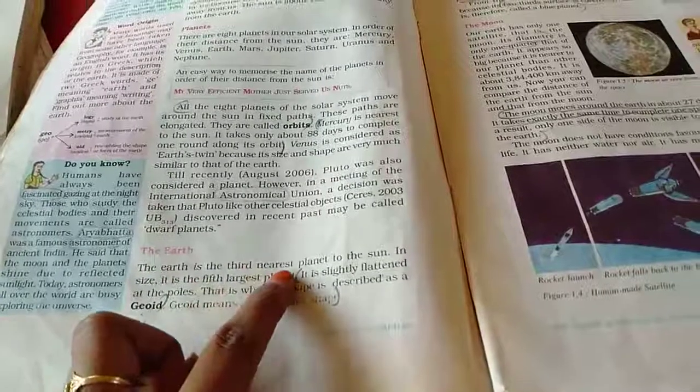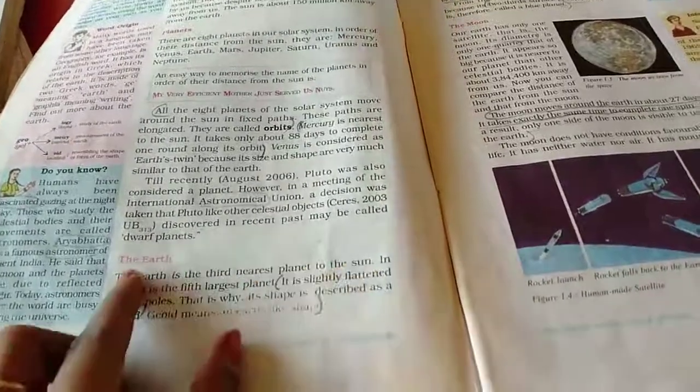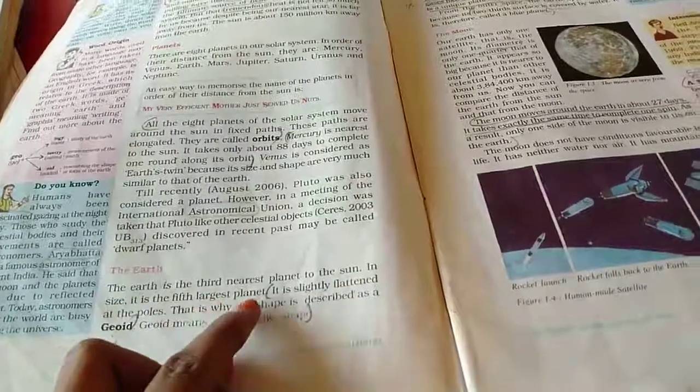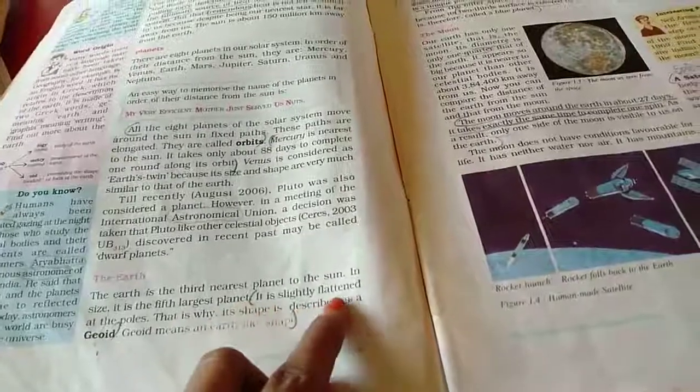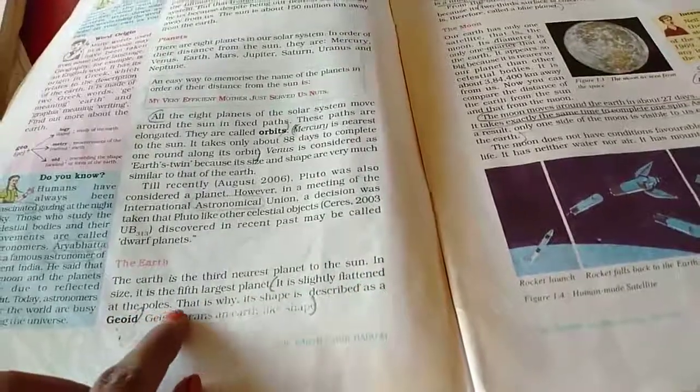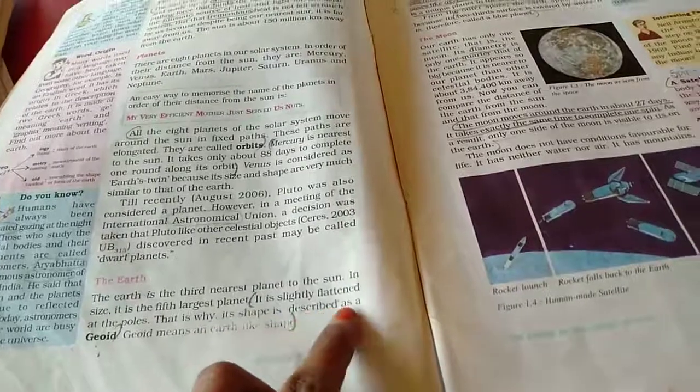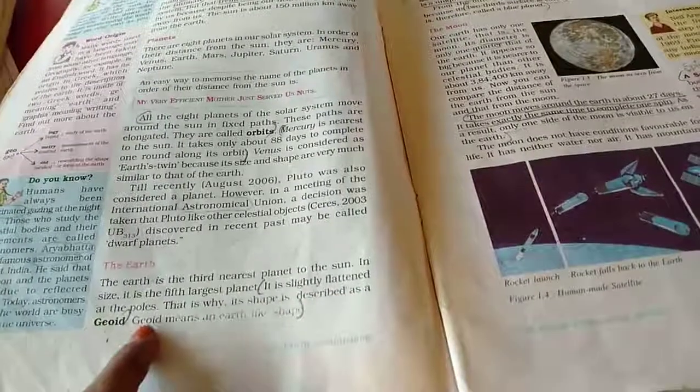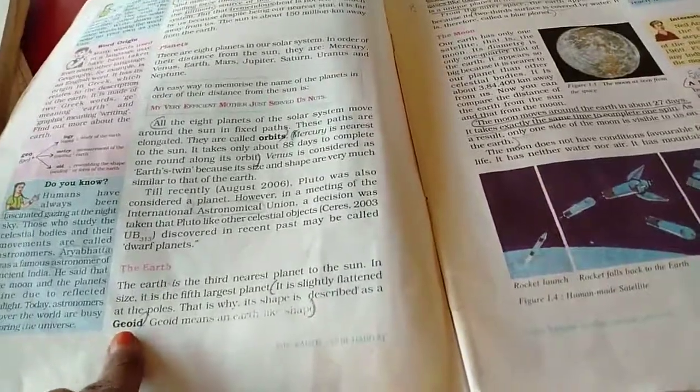The earth is the third nearest planet to the sun. In the size, it is the fifth largest planet. It is slightly flattened at the poles. That's why its shape is described as a geoid. What is the shape of the earth? Geoid.